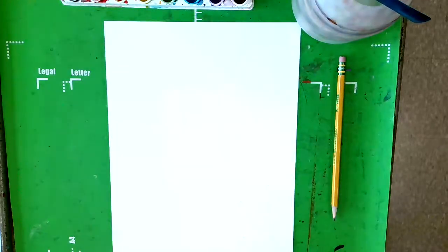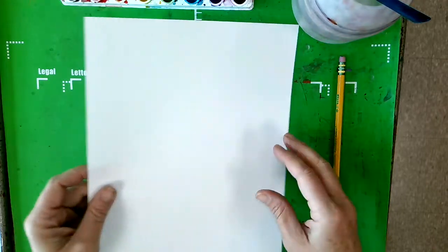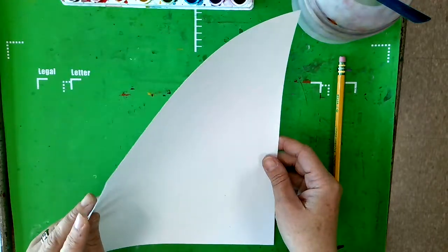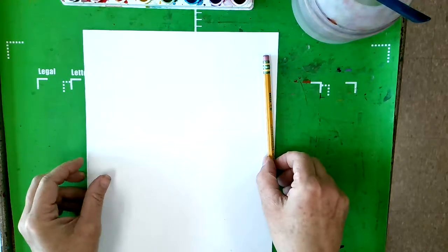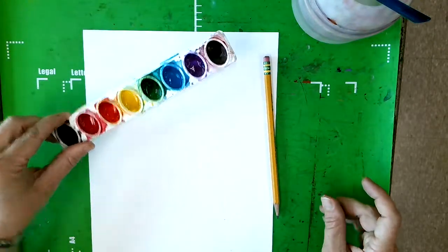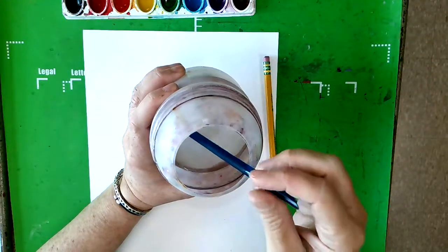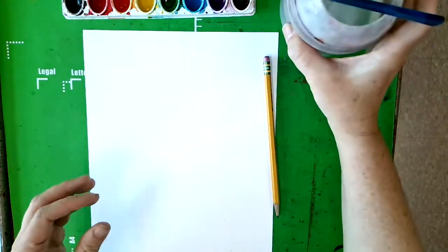The supplies you're going to need for this art project are a piece of white cardstock paper, a pencil, some watercolor paints, some water and a paintbrush, and a black and white crayon.